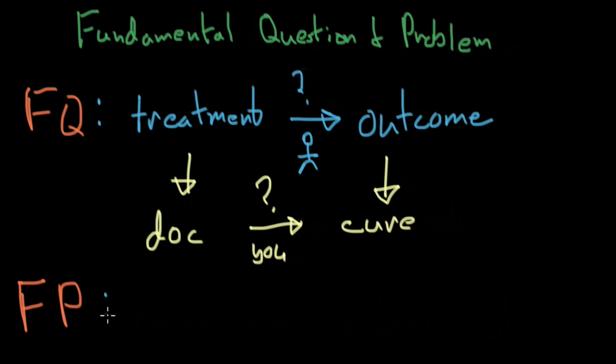Why is it so hard? It's because of the fundamental problem. The fundamental problem is that you're never able to see the counterfactual. So counterfactual is just a big word that means you're never able to see what you didn't choose.